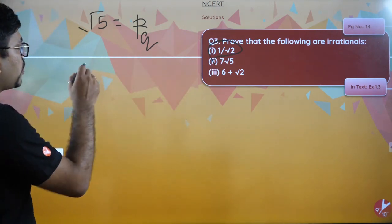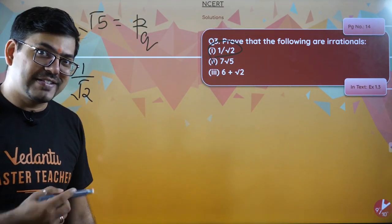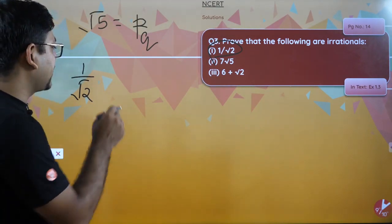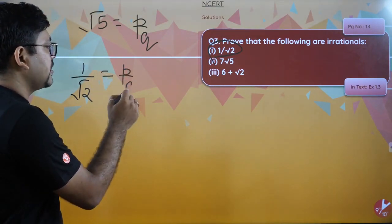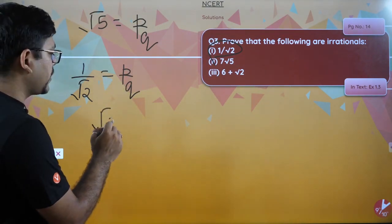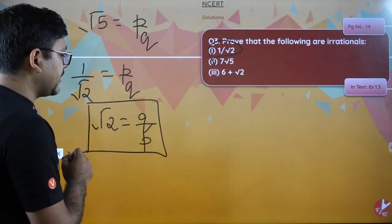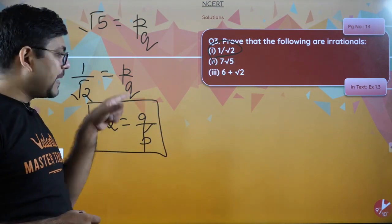Here also, what we are going to do: 1 by root 2 is given. I will again assume that 1 by root 2 is a rational number, the same method of contradiction. After this, I'll write that if this is a rational number, you will write it as p by q, then you will do the reciprocal. You will write root 2 equals q by p.